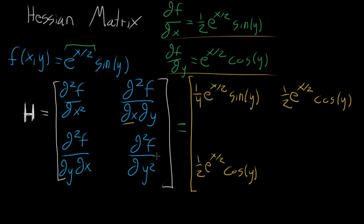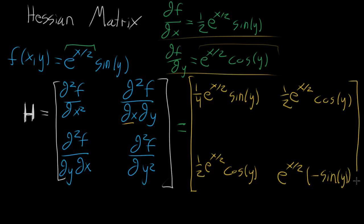The last term, where we differentiate with respect to y twice: taking the derivative of e to the x halves times cosine of y with respect to y, e to the x halves looks like a constant, and the derivative of cosine is negative sine, giving negative e to the x halves times sine of y. So this whole matrix — each of whose components is a multivariable function — is the Hessian of f. You can think of it as a matrix-valued function: you plug in values for x and y and you get a matrix.